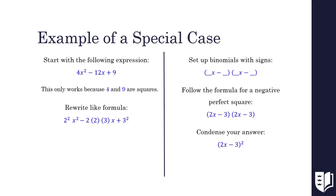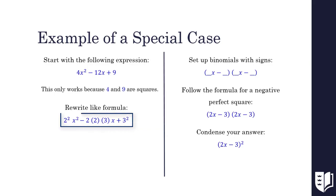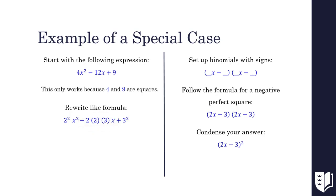Now let's do an example of one of these special cases. We want to factor the expression 4x squared minus 12x plus 9. Notice that this only works because both 4 and 9 are perfect squares. First, we want to rewrite this expression like the formula, giving us 2 squared times x squared minus 2 times 2 times 3 times x plus 3 squared. We note that only the middle sign is negative, which means our binomial factors will also be negative. Following the formula, we plug a factor of 2x into our first term and 3 into our second term. We know these factors need to be identical, so we can represent these binomials as a single binomial squared, giving us the quantity 2x minus 3 squared.